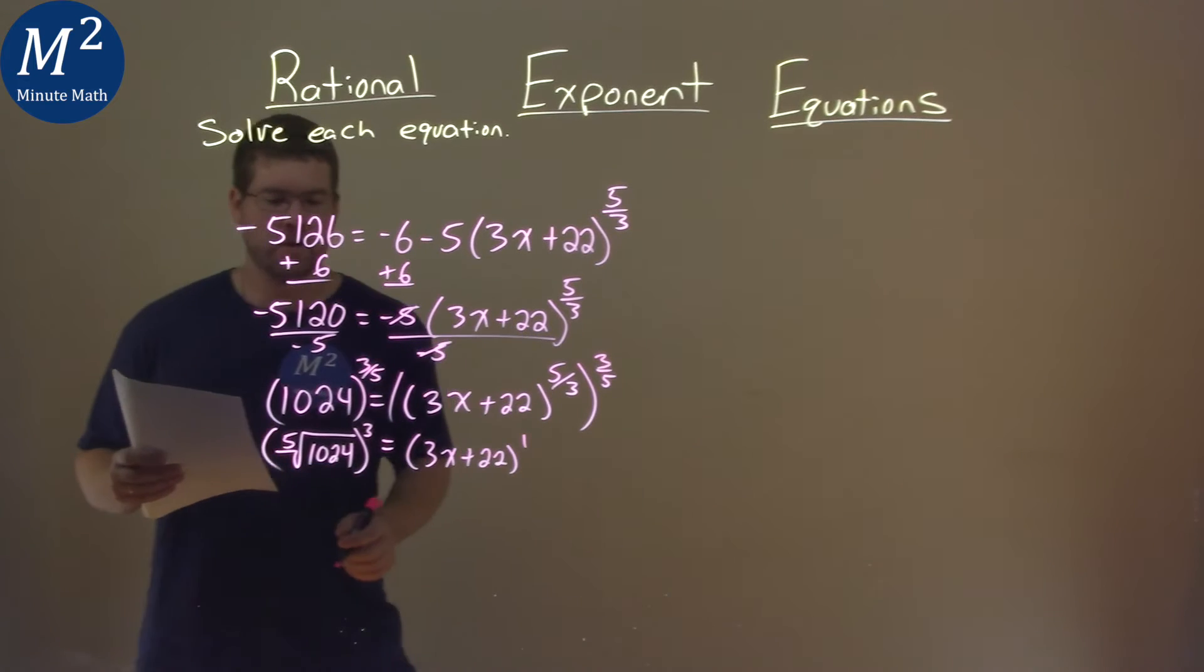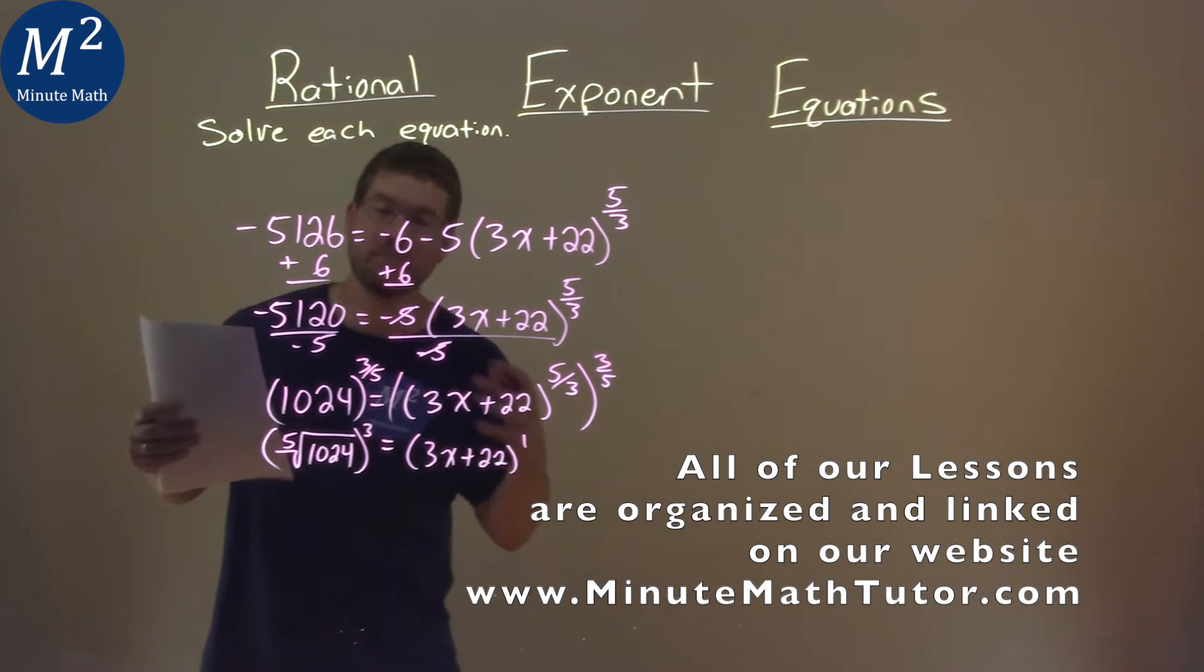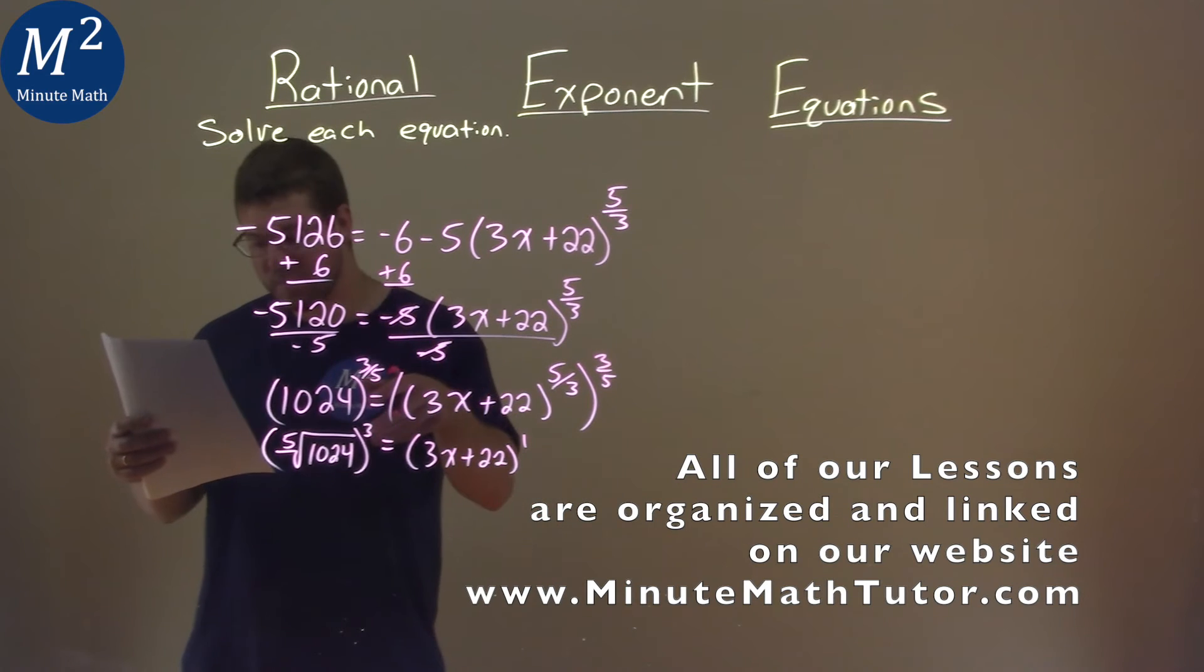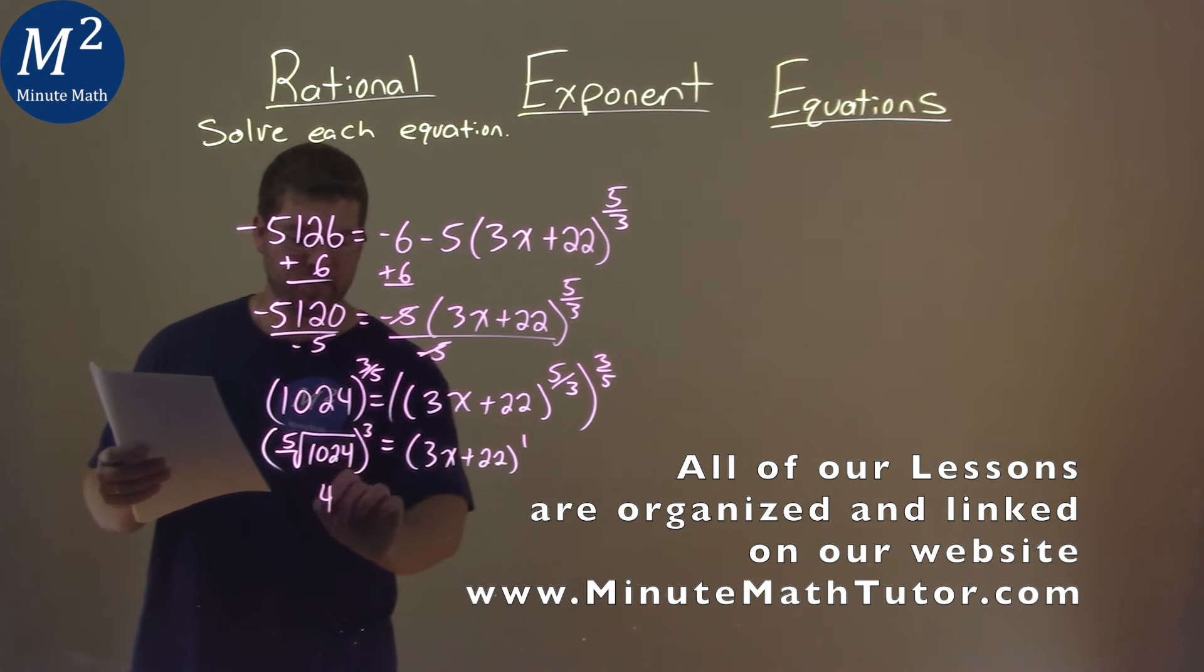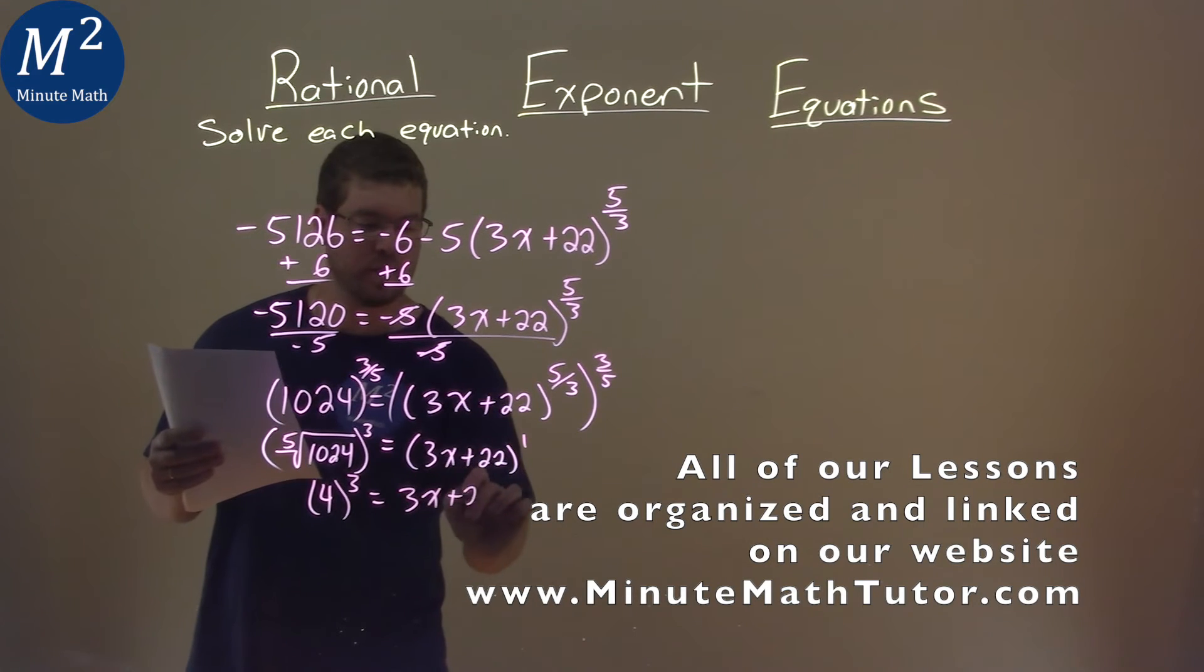So continuing with the left-hand side: what's the fifth root of 1,024? That's 4. Raise it to the third power, and we have 3x plus 22 on the right.